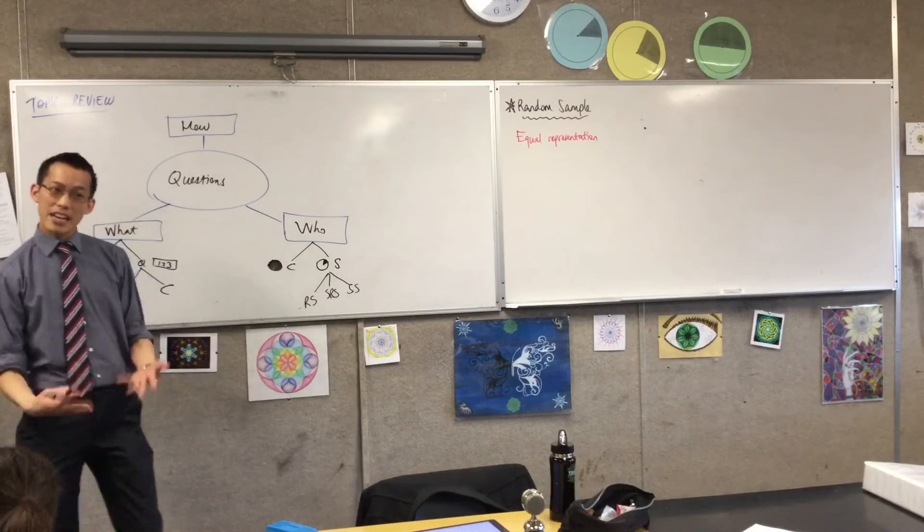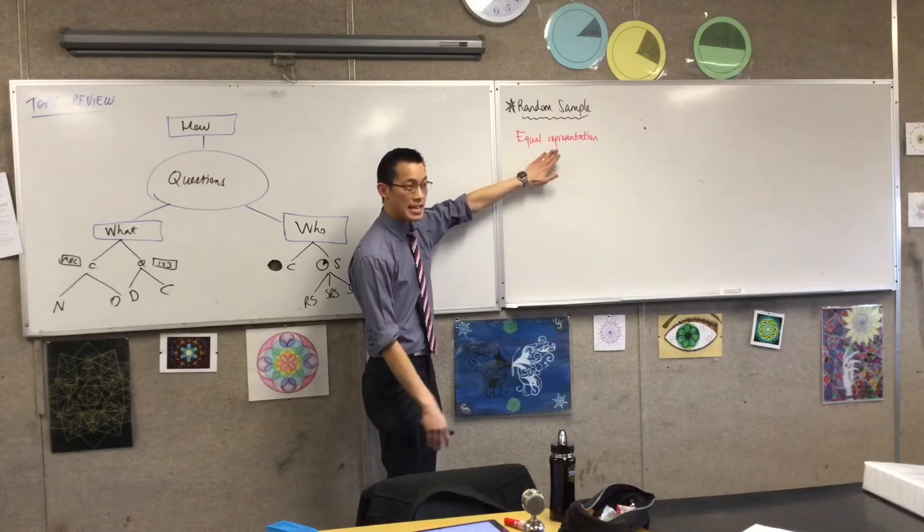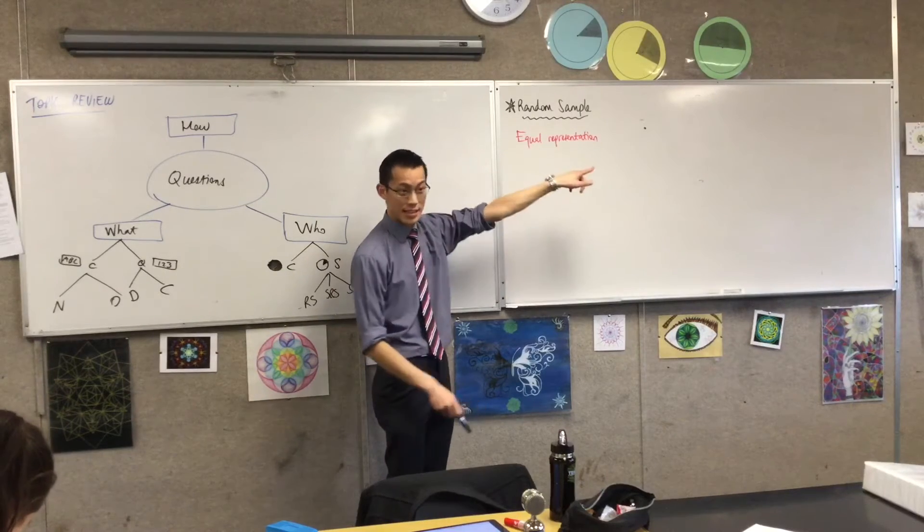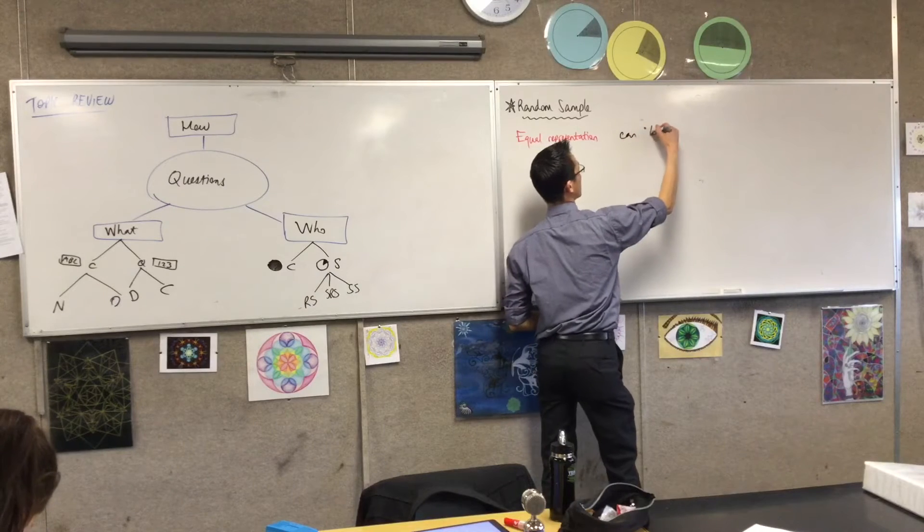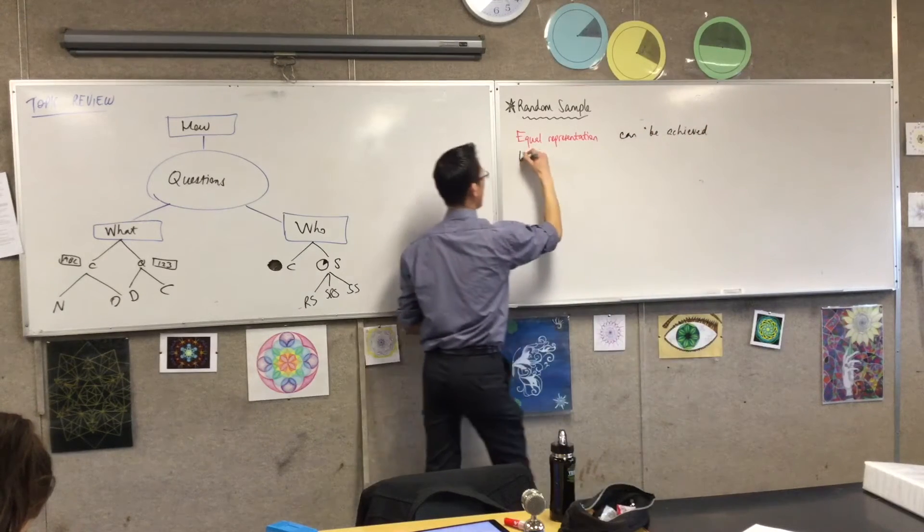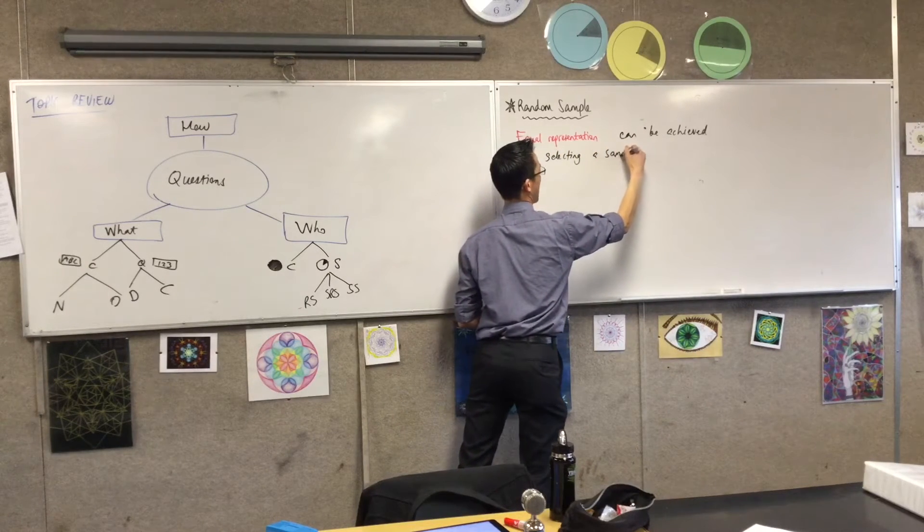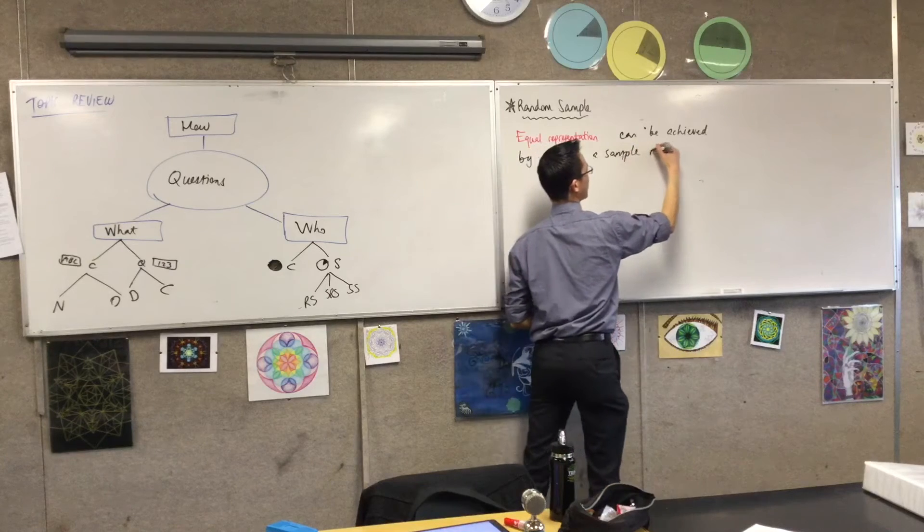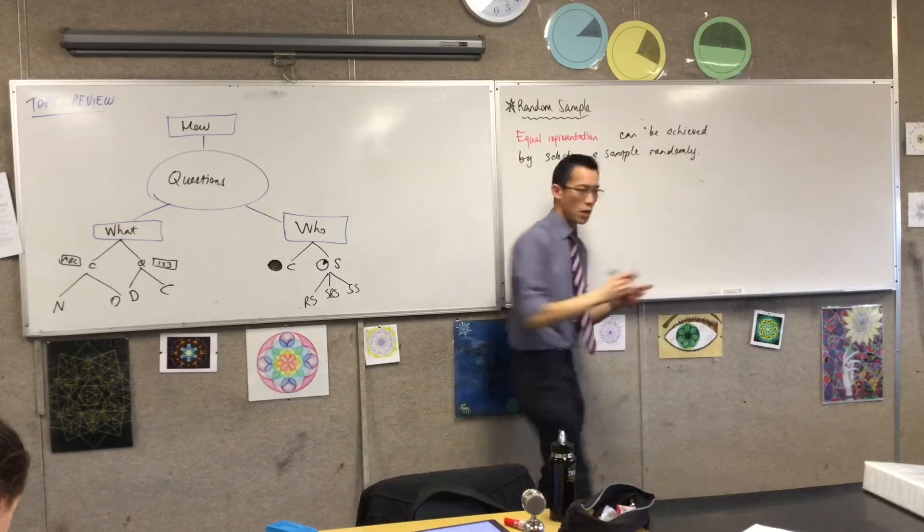Your representation of the target population is not equal, it's skewed in some particular direction. You're only getting these kinds of people. So a random sample is, the whole idea, is one of the greatest ways to get an equal representation. So here's the sentence. Equal representation can be achieved by selecting a sample randomly. Hence the name, random sample.